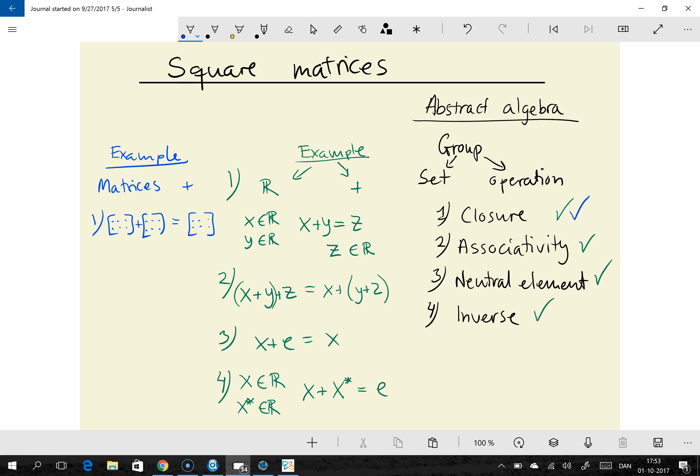And what about associativity? Well I won't go into proofs but I believe it's pretty obvious that it doesn't matter what order we add the matrices since after all the operation of addition is the same as we know it from the real numbers except we just perform it on each element. So we can safely say that it doesn't matter whether we are adding these two first or if we are adding these two first. So associativity is taken care of as well.